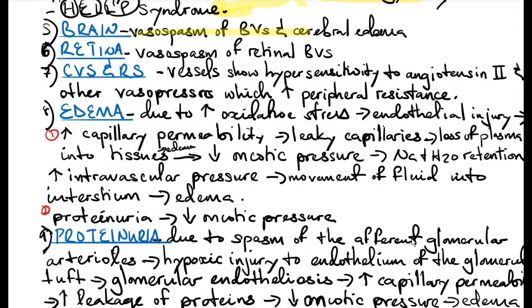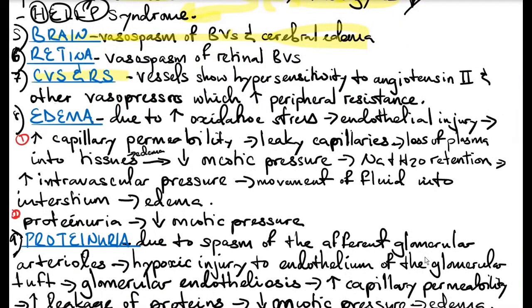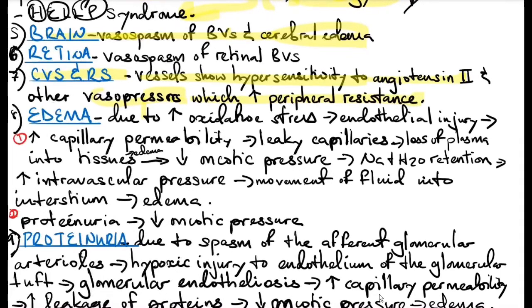There is vasospasm of the blood vessels of the brain, resulting in capillary thrombosis, infarction, intraventricular and parenchymal hemorrhages, and cerebral edema. There is also vasospasm of the retinal blood vessels. In the cardiovascular and respiratory systems, hypersensitivity to angiotensin 2 and other vasopressors like endothelin and thromboxane results in increased intravascular pressure and loss of endothelial cell integrity, leading to greater vascular permeability, edema formation, heart failure, and pulmonary edema.